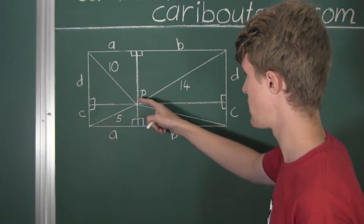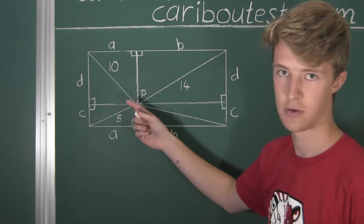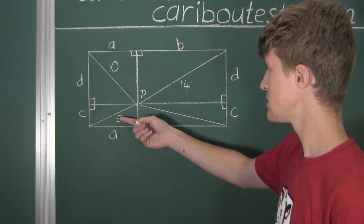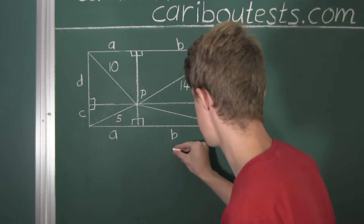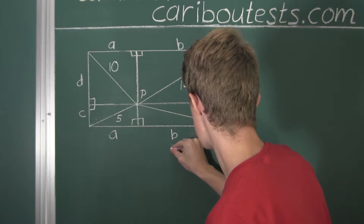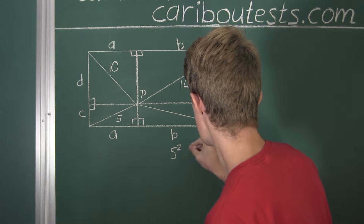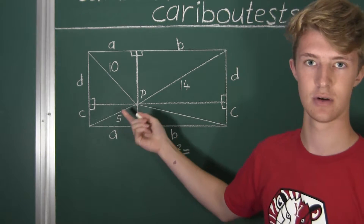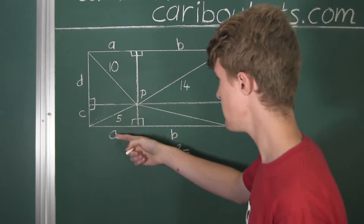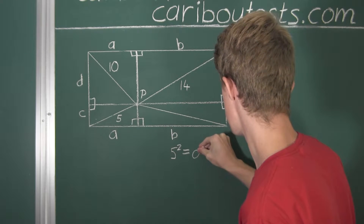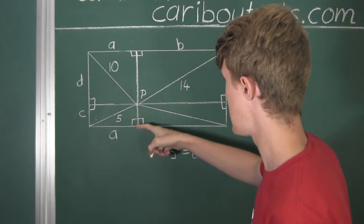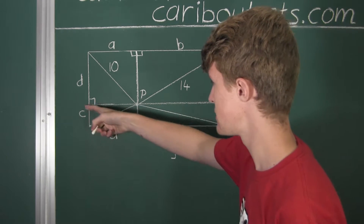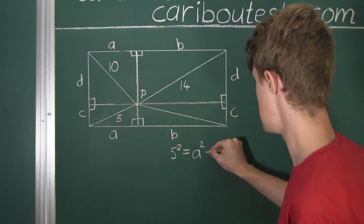Let's start with this triangle here. We know the hypotenuse — the line opposite to the right angle — is 5. So 5 squared must equal the sum of the squares of the other two sides: this side is A, so A squared, plus this side which we know is C, so plus C squared.